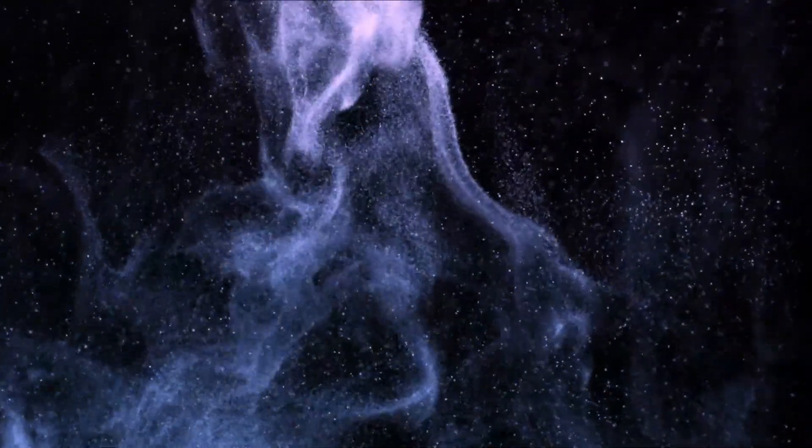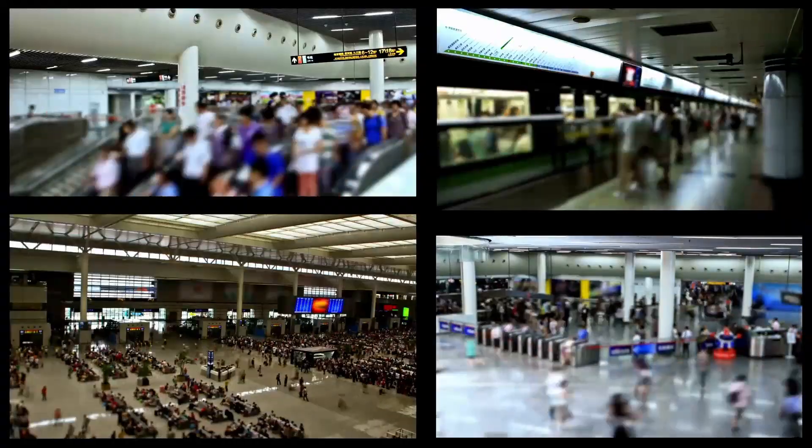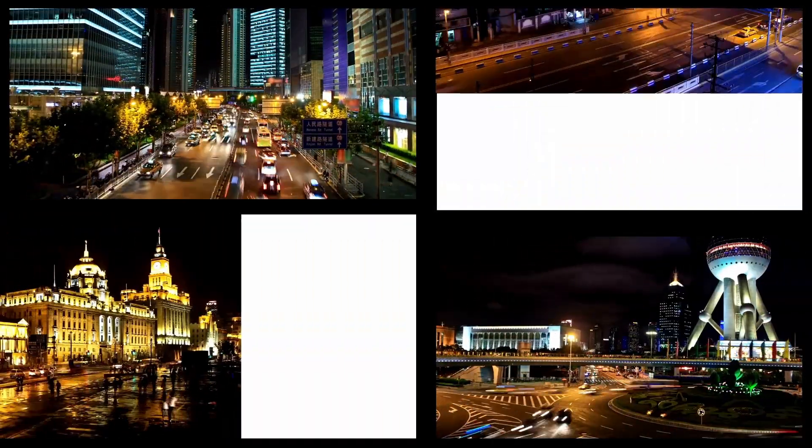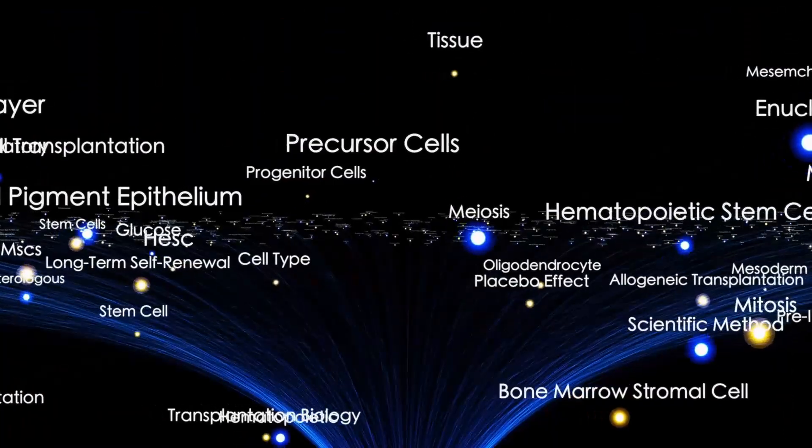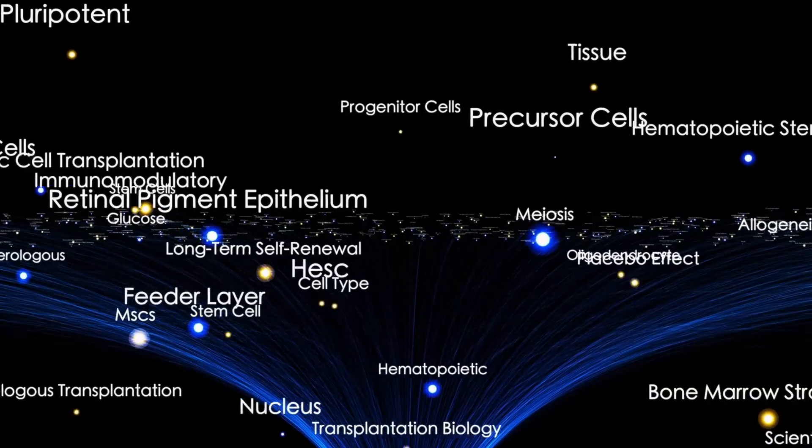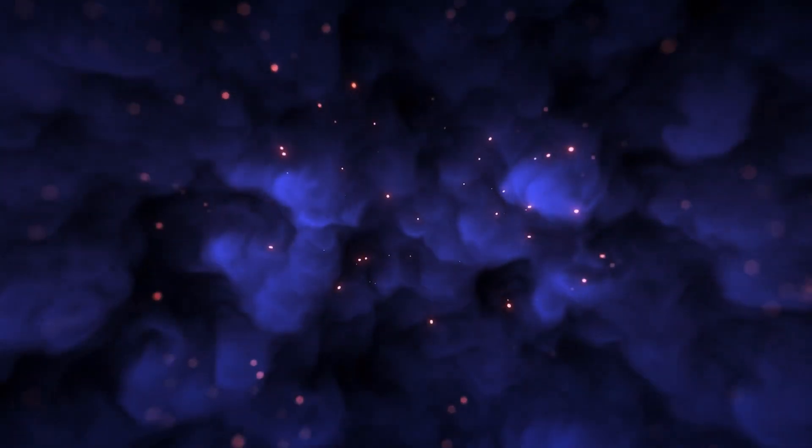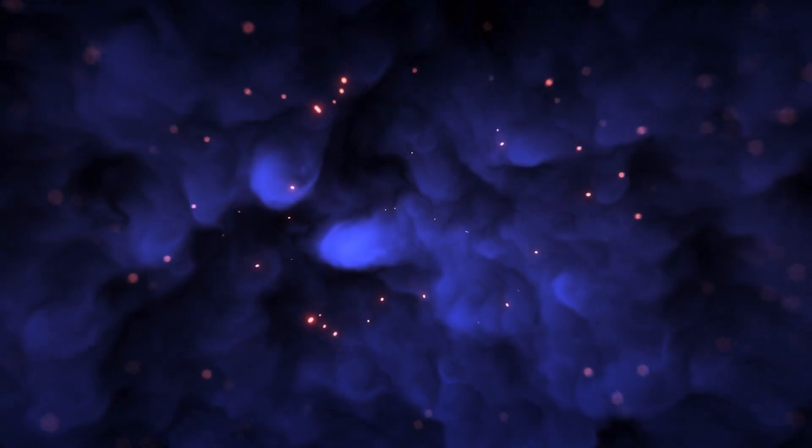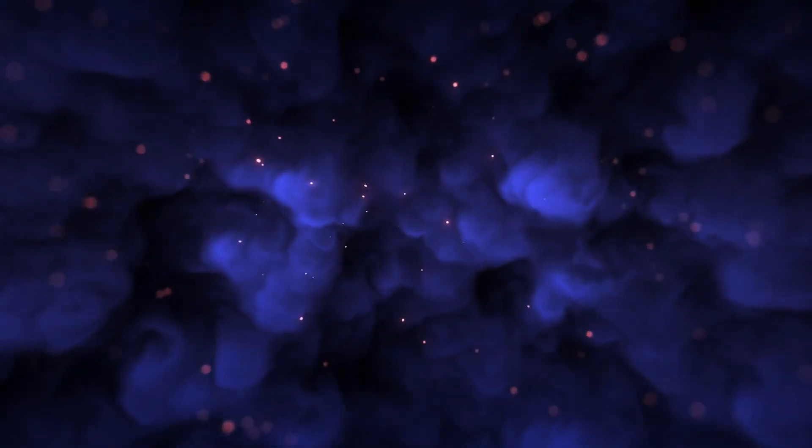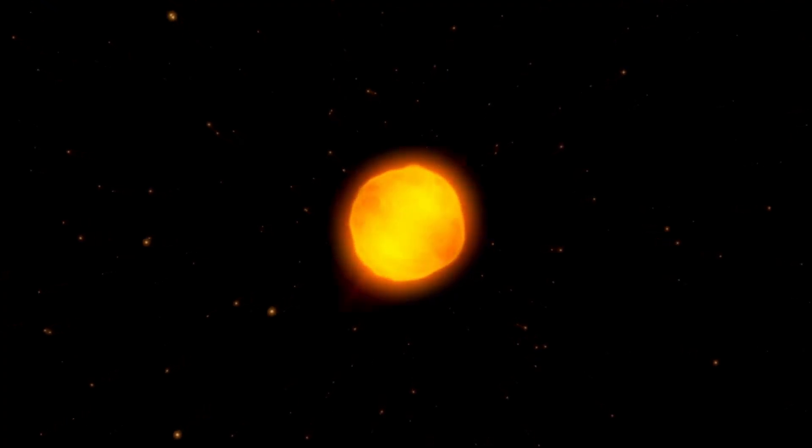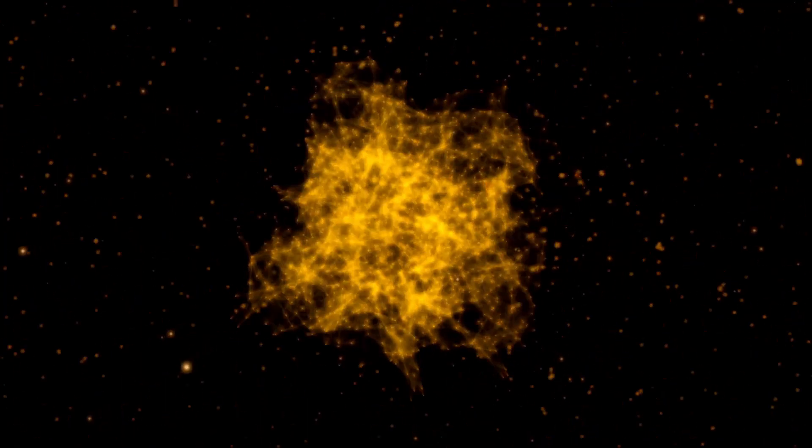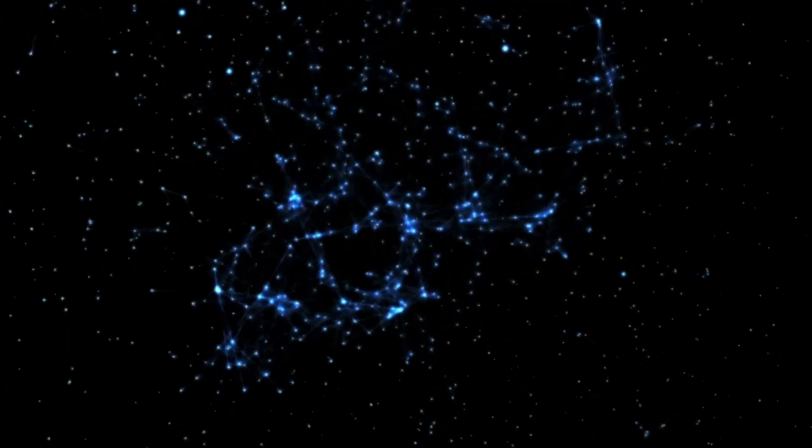Musk wasn't the first to suggest an artificial origin. That claim belonged to Dr. Avi Loeb, the Harvard astrophysicist who had made similar arguments about Oumuamua back in 2018. But Musk gave it reach. In one interview he asked, 'If you wanted to study intelligent life, you'd send something that looks unremarkable, right? Like a rock.' He argued that dismissing anomalies had become a bad scientific habit. 'We call every unexplained thing a coincidence,' he said. 'That's not skepticism. That's denial.'